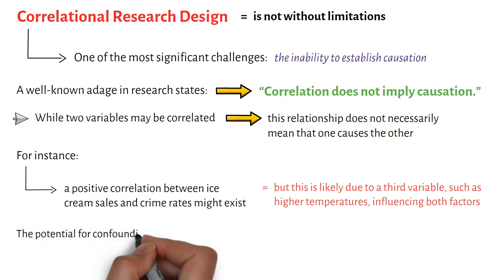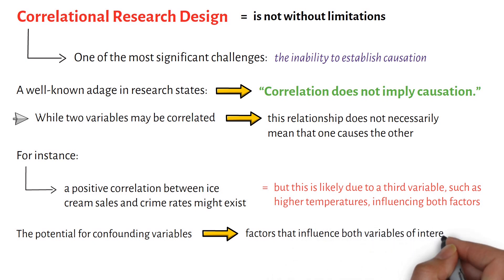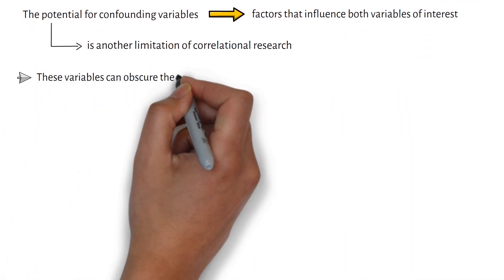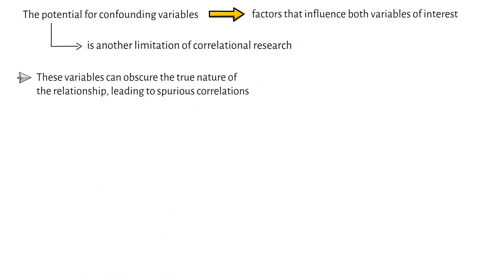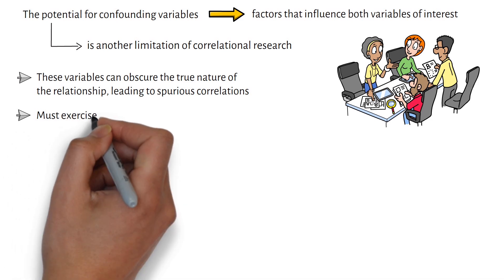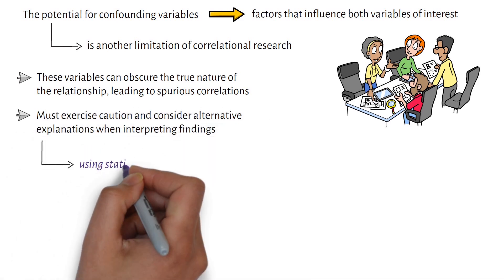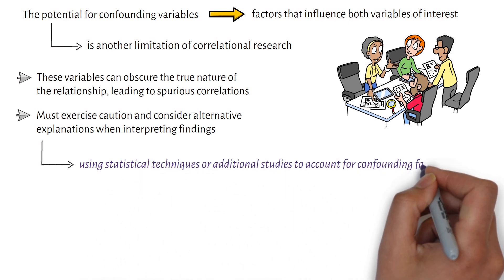The potential for confounding variables—that is, factors that influence both variables of interest—is another limitation of correlational research. These variables can obscure the true nature of the relationship, leading to spurious correlations. Researchers must exercise caution and consider alternative explanations when interpreting findings, using statistical techniques or additional studies to account for confounding factors.